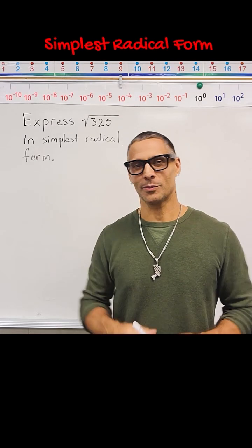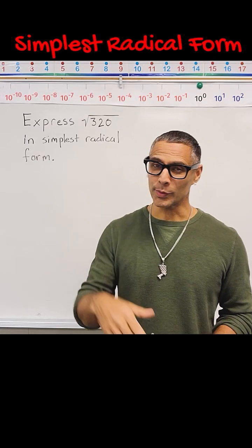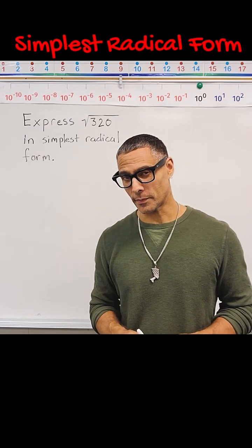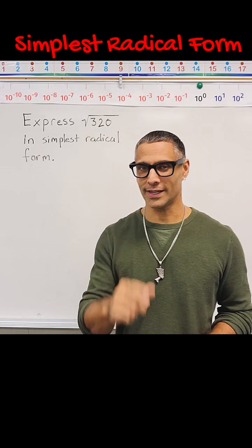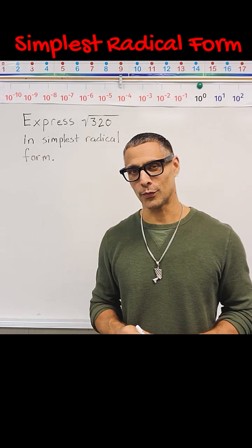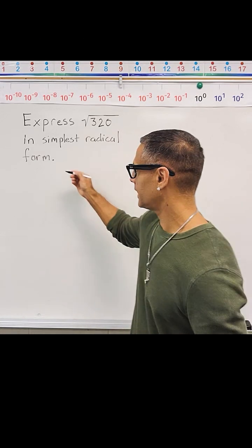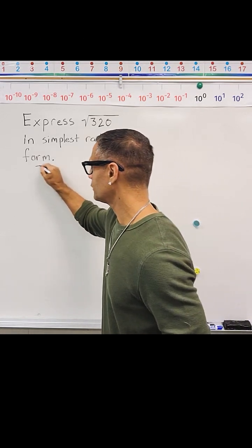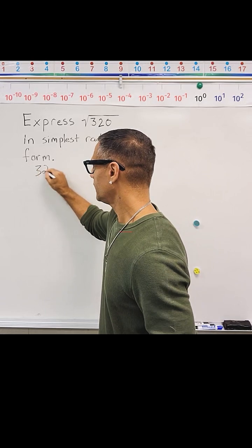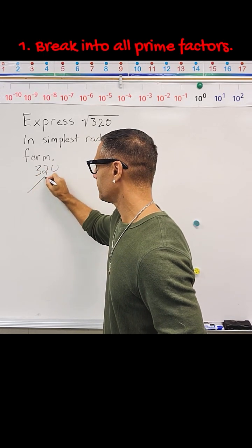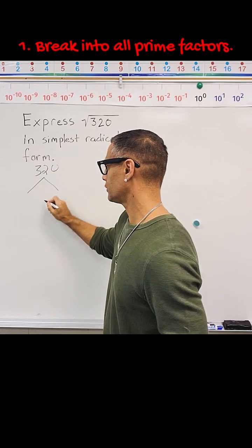Hey, this is Mr. Masonette, and what we're going to do in this video is take the square root of something and express it in simplest radical form. So let's start by rewriting 320 and figuring out what two numbers we can multiply to make 320.